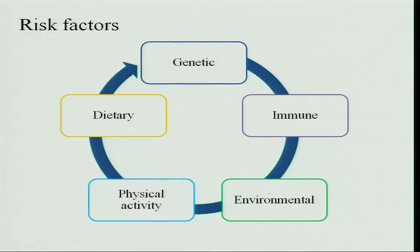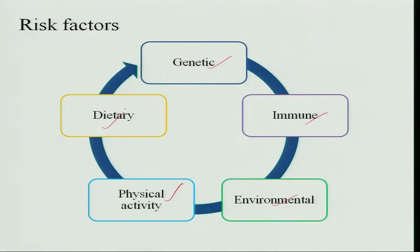Risk factors include genetic predisposition, a disturbed immune system, and environmental factors such as pollution, food, pesticides, and drugs. Lack of physical activity also contributes to uncontrolled growth of cells. Dietary habits like a high fat diet and sedentary life cause oxidation in the body, leading to uncontrolled cell production and tumors.